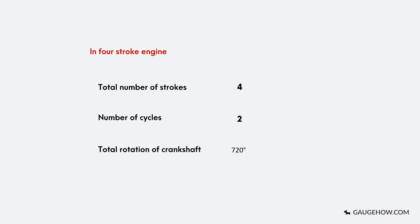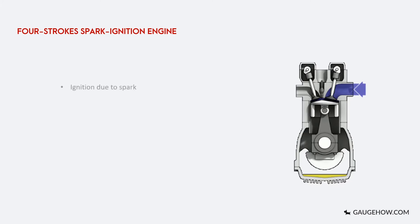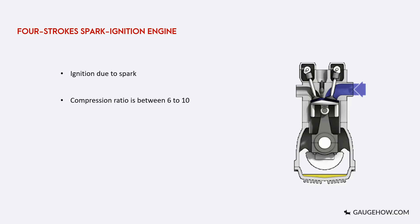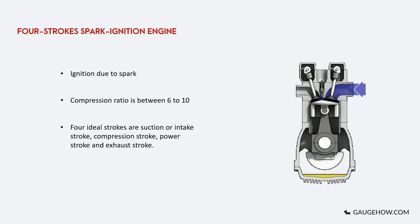Since ignition in this engine is due to spark, it is called a spark ignition engine. The compression ratio for this engine is between 6 to 10. Compression ratio is the ratio of the maximum to the minimum volume of the space swept by the piston of an IC engine during a complete stroke. The four strokes are: suction or intake stroke, compression stroke, power stroke, and exhaust stroke.